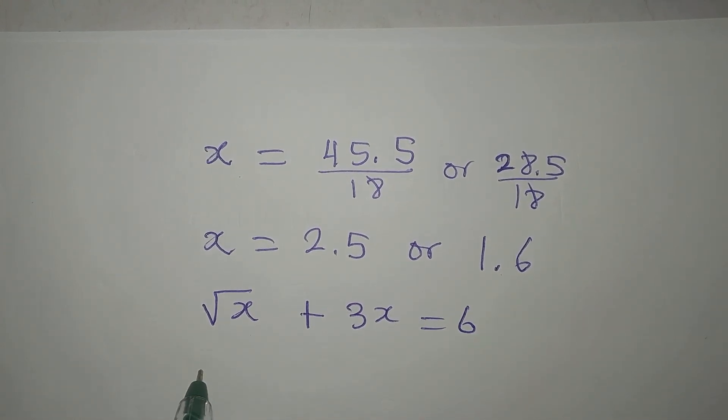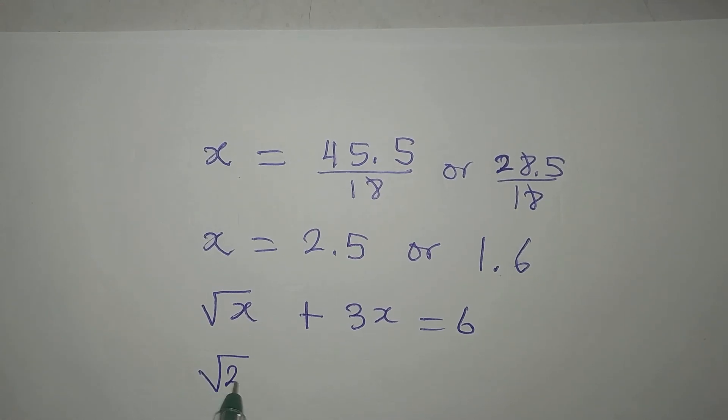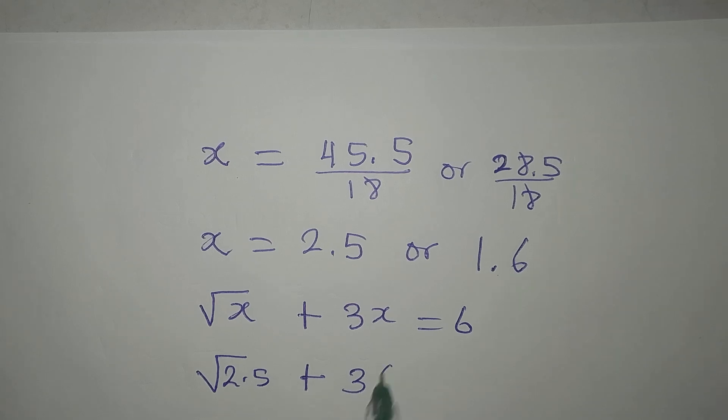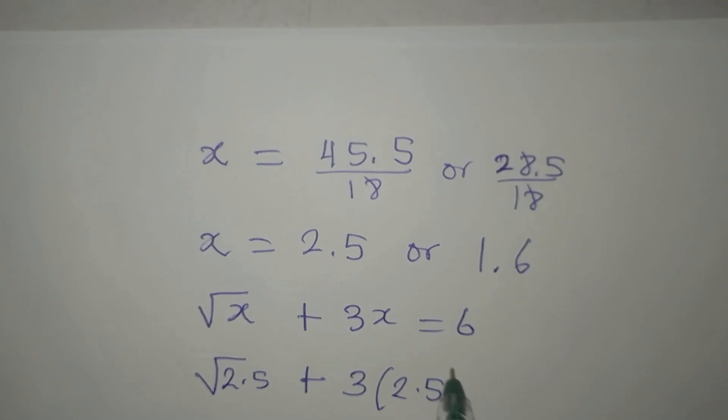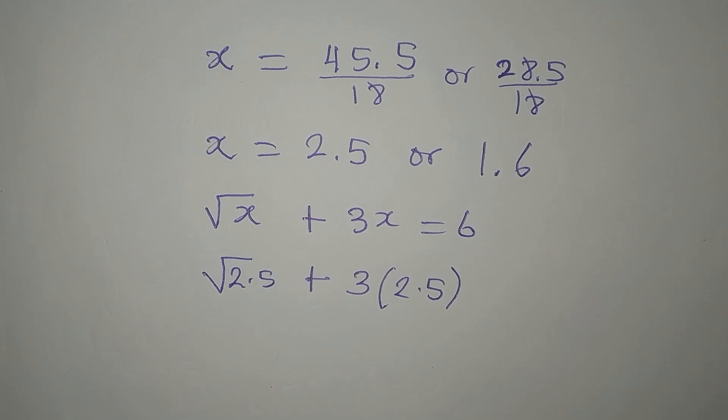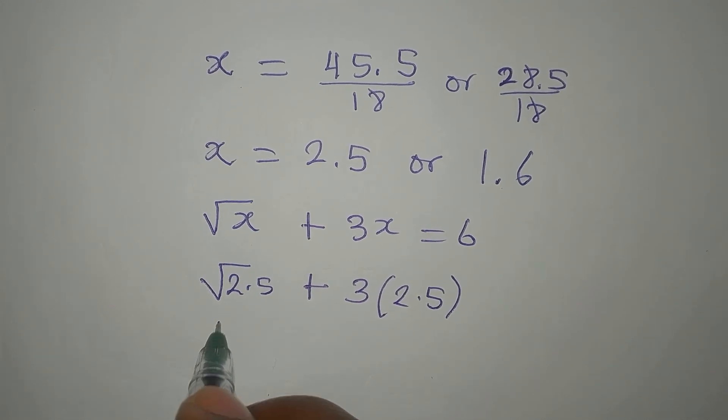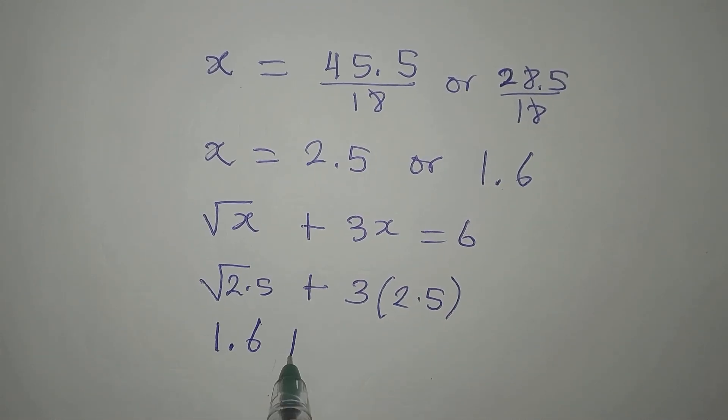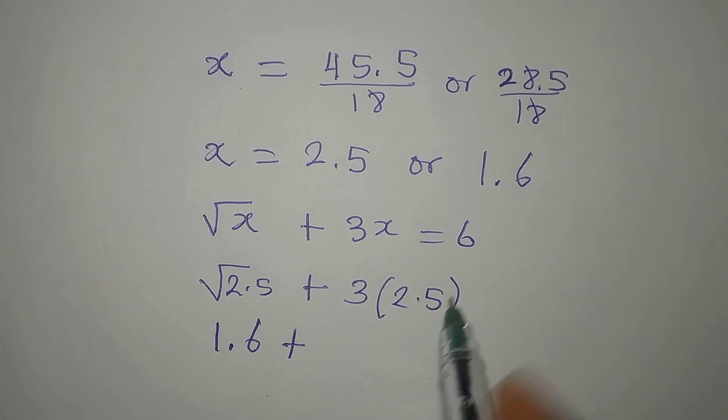Okay, so here now, it means I have square root of 2.5 plus 3 times 2.5. Okay, so let's simplify this and see. First of all, square root of 2.5 is 1.6 plus 3 times 5 is 15.